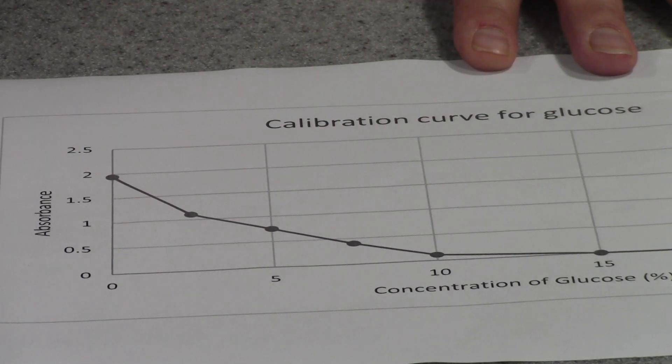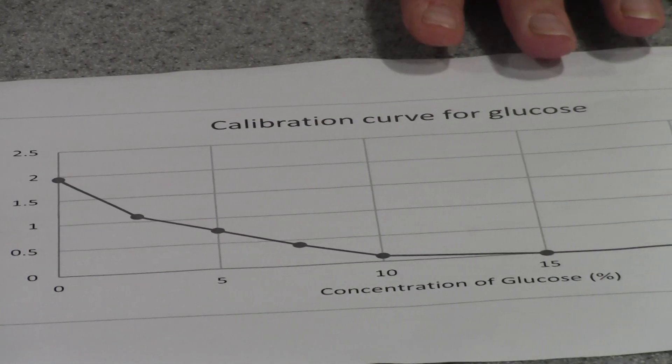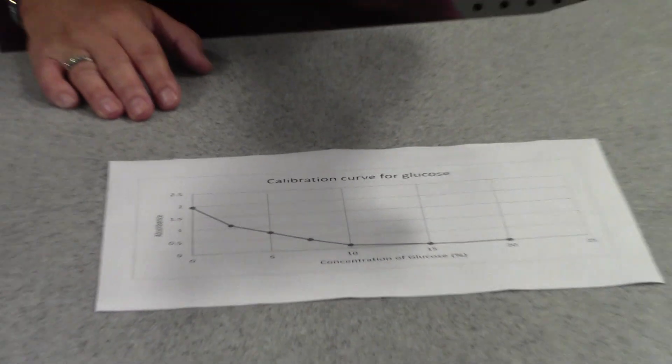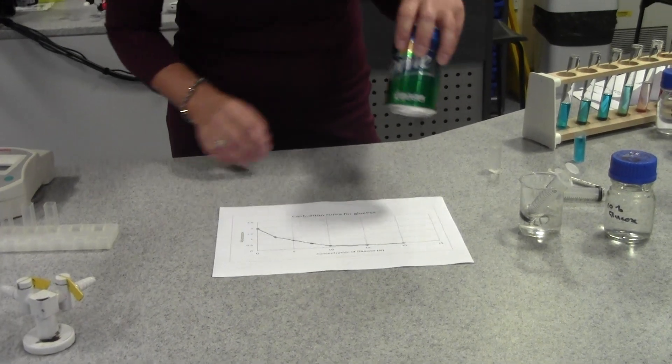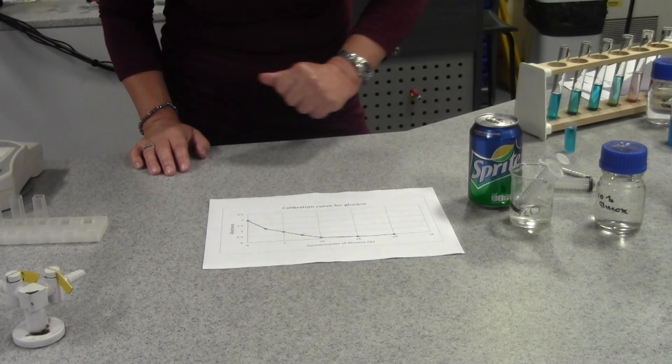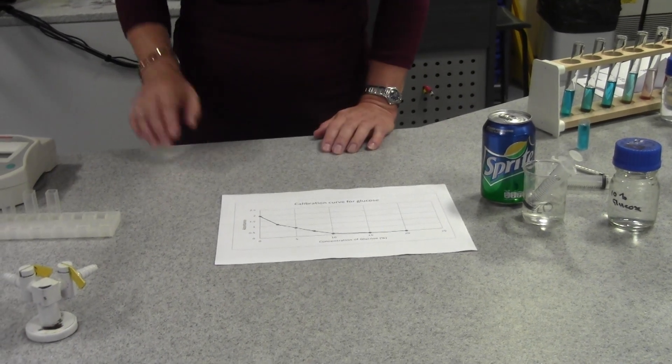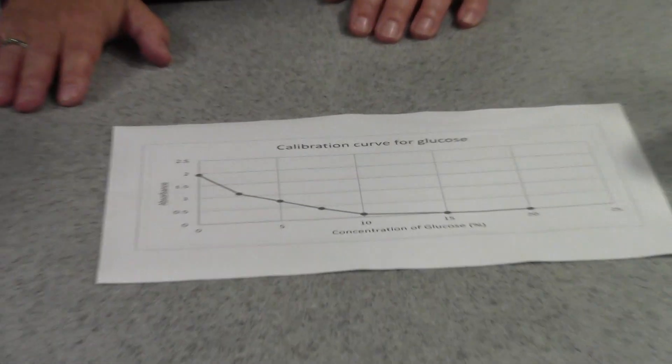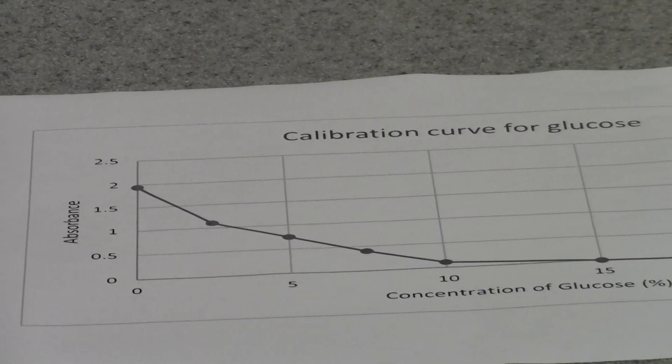Now then I'm also going to test the filtrate from the fizzy drink, you can use anything, a sports drink, lemonade, sprite, today. And when I did this I found out that the absorbance of red light was 1.75.